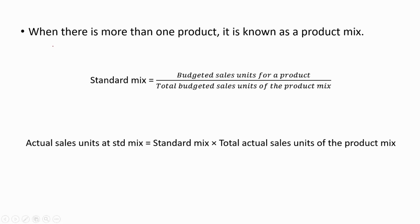In order to calculate the sales mix and sales quantity variances, you must know how to calculate the standard mix. When there is more than one product, it is known as a product mix. The standard mix for each product is equal to the budgeted sales units for a product divided by the total budgeted sales units of the product mix. It is important to use the budgeted values for both numerator and denominator. Standard also means budgeted.